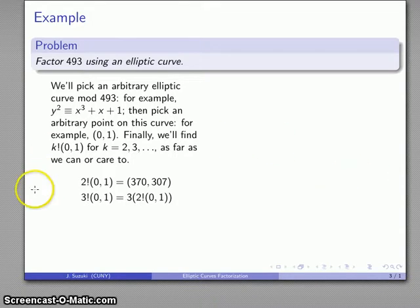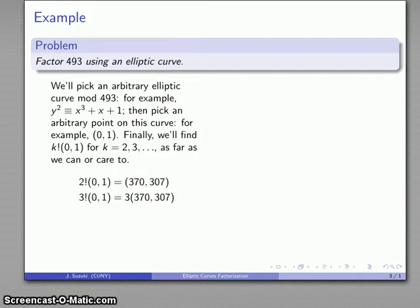Remember, as with Pollard's p-1 algorithm, the advantage using factorials is that every factorial is n times the preceding factorial. So 3!(0,1) is 3 times 2!(0,1). And I know what 2!(0,1) is, so I'll substitute that in. I'll use my elliptic formula and there's my point.